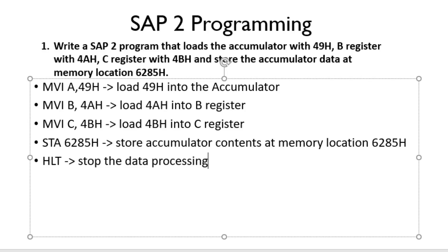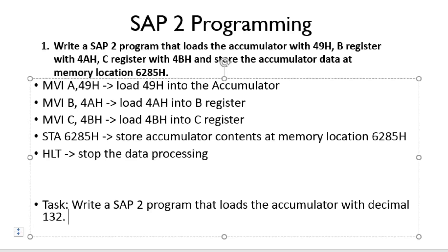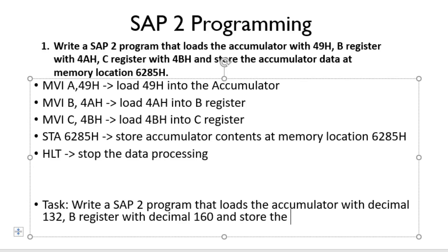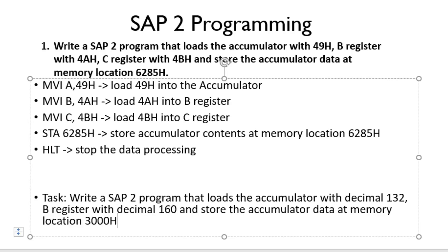So basically we have now finished our today's question. I will give you a task. Today's task is: write a SIP2 program that loads the accumulator with decimal 132, B register with decimal 160, and store the accumulator data at memory location 3000H.